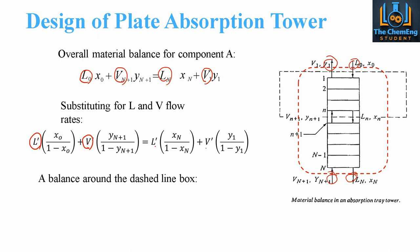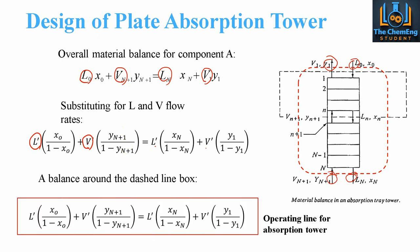Now again, if we balance around the dashed lines, this will give us what is known as the operating line for your absorption column. So whenever you hear about the operating line or absorption column, this is the equation that we refer to. And this is the baseline for the design procedure of an absorption tower.